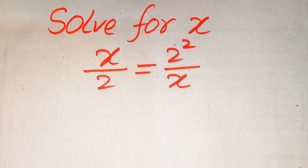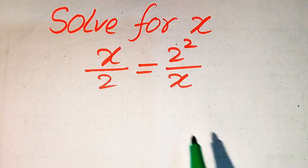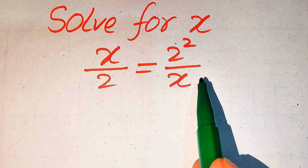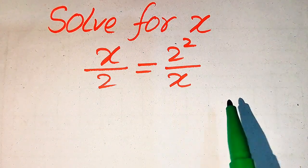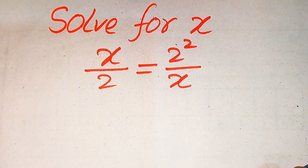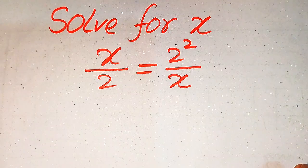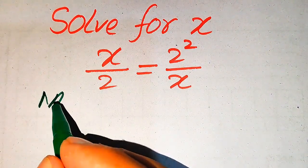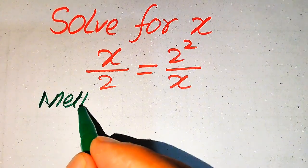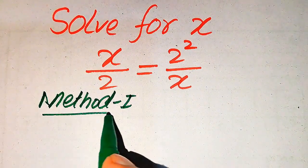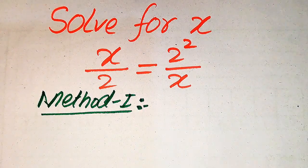Hello everyone. How to solve this problem for the values of x if we have x divided by 2 equals 2 squared divided by x. We solve this problem using two methods. I hope you like both of these methods, but if you have any other method in mind, please don't hesitate to write it in the comment section.